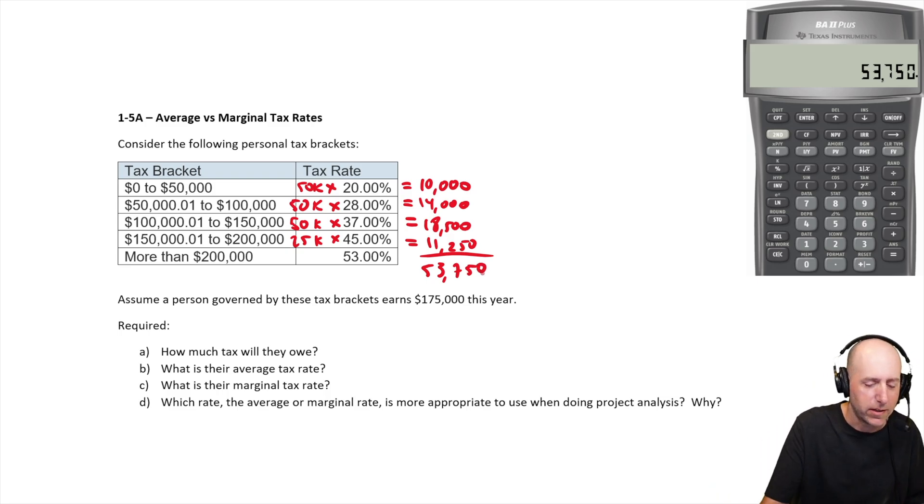But, oh, we've answered it. Question one. How much tax do they owe? So $53,750.